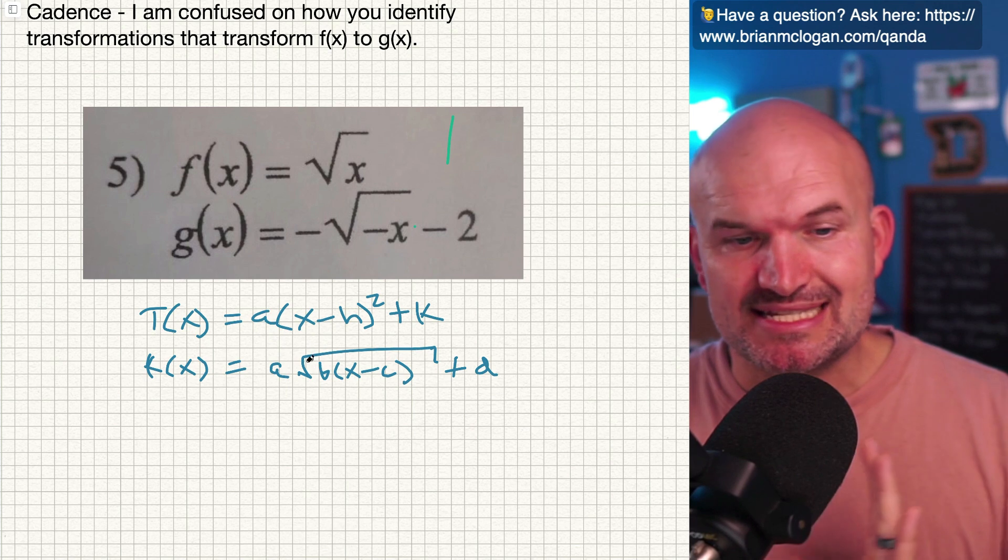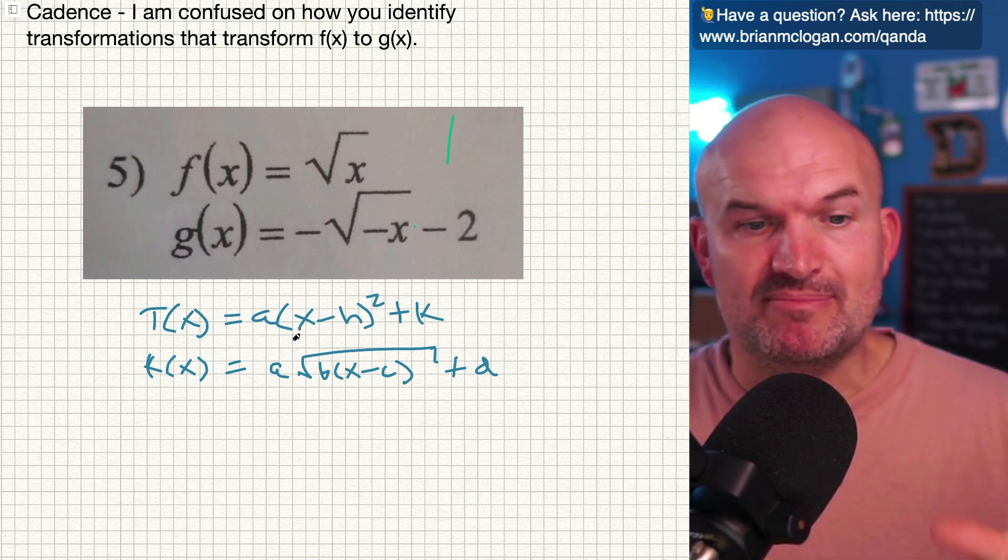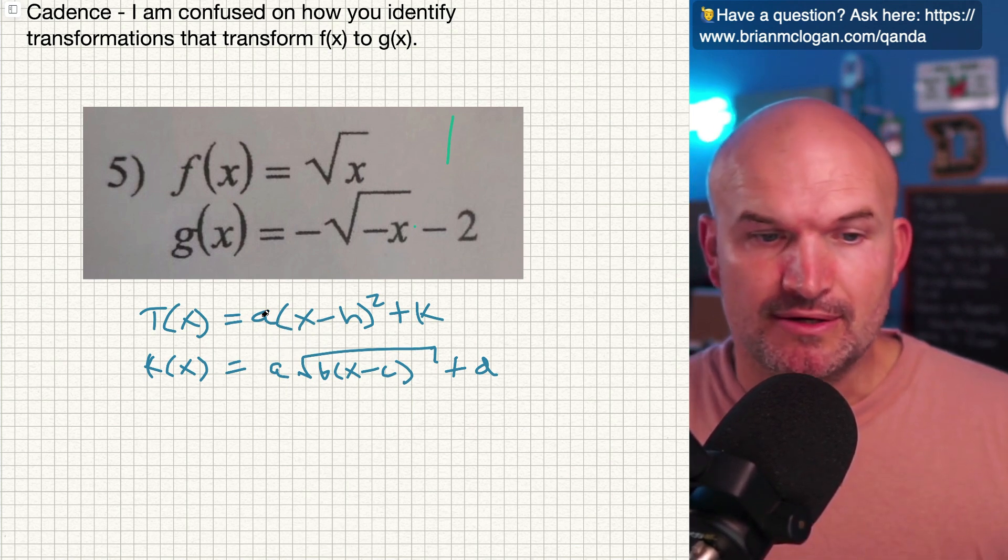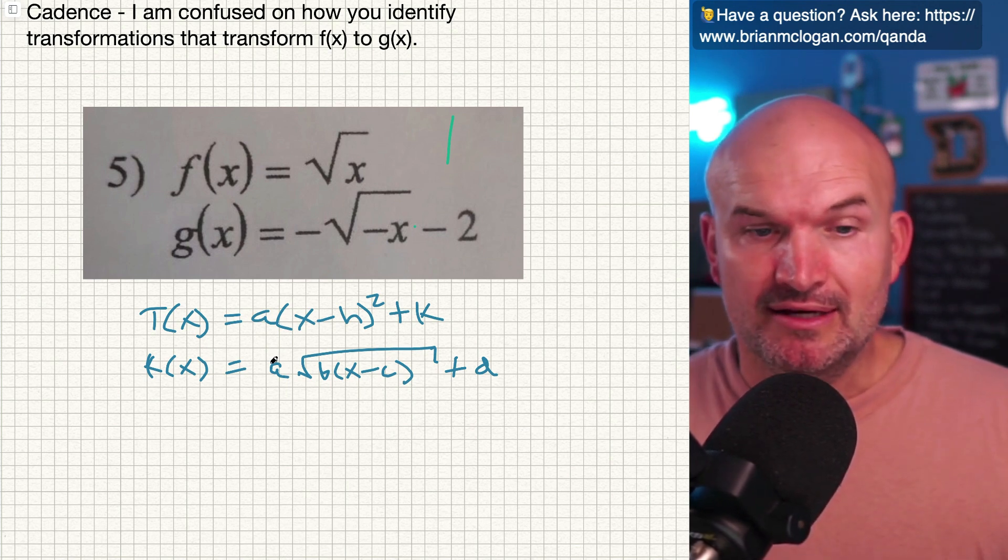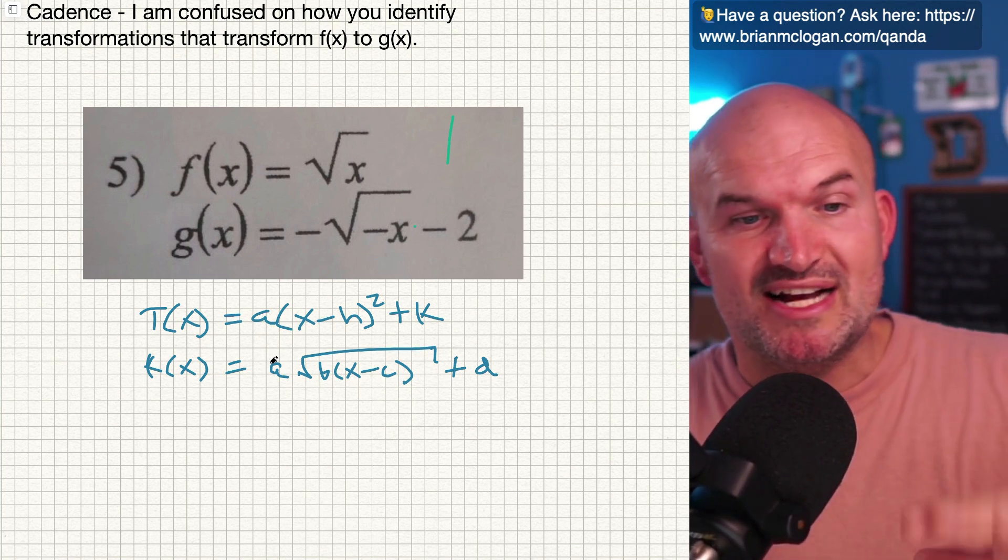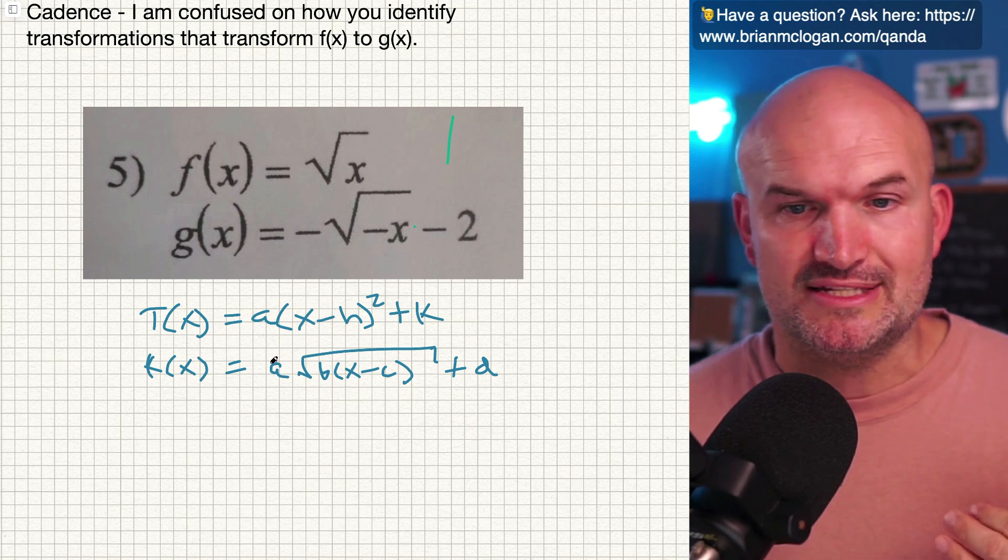A is multiplied to the constant. Oh, I'm sorry. A is being multiplied by what the part, the function is. Okay. So whenever you have a number that's being multiplied on the outside, that is either going to vertically stretch, compress, or reflect about the x-axis.